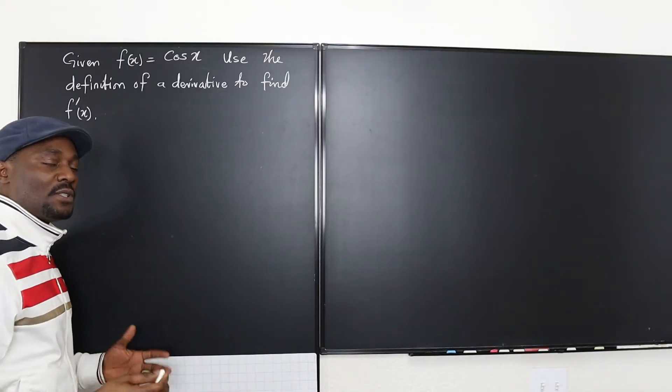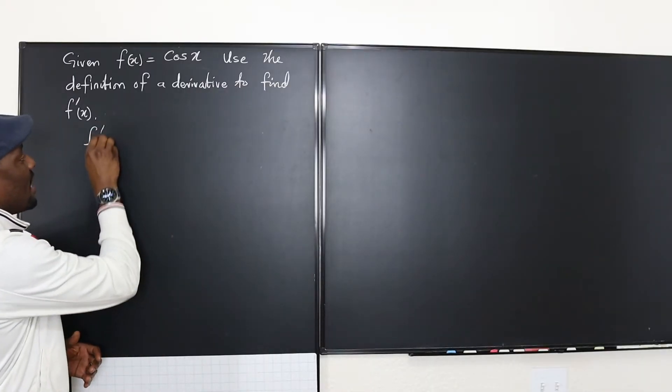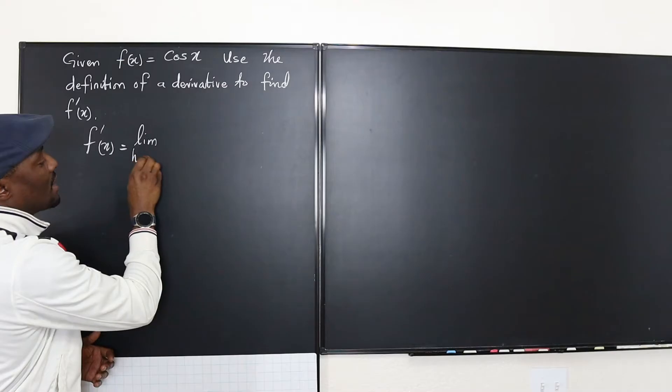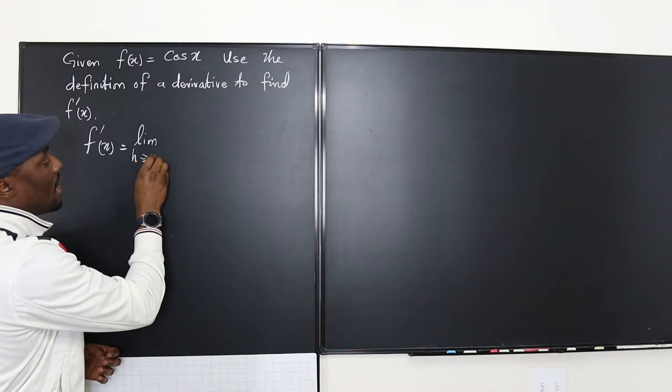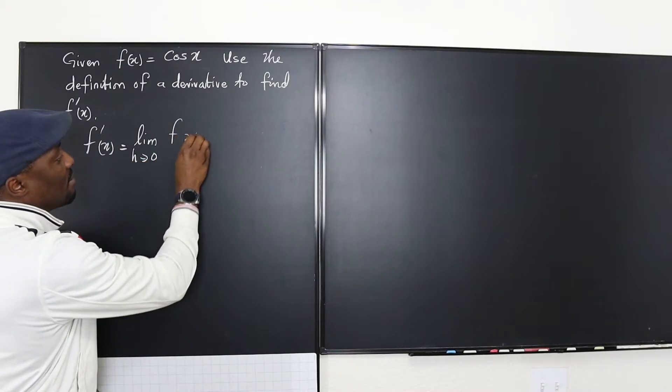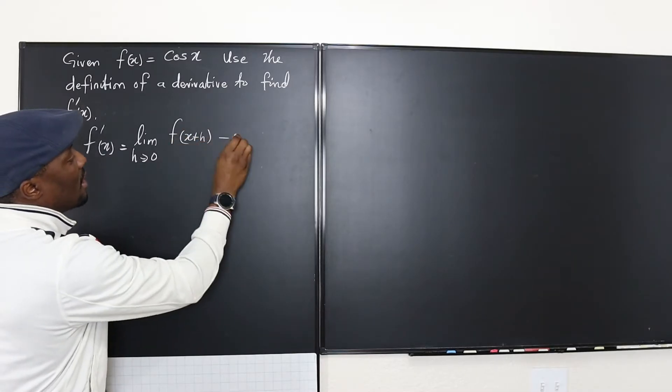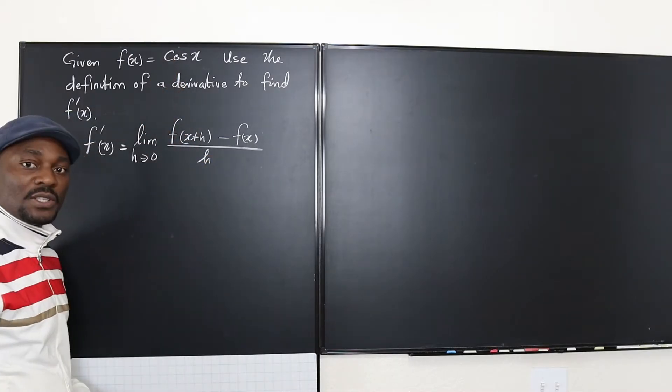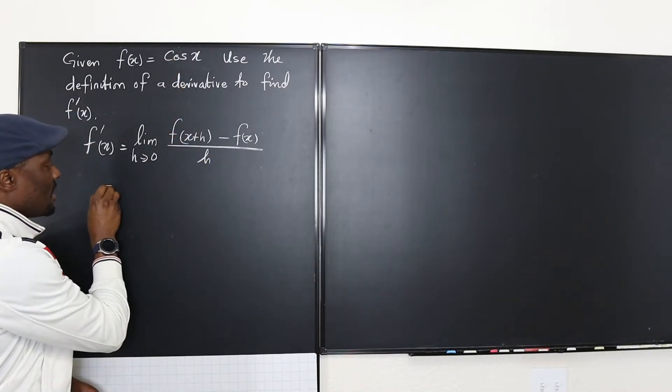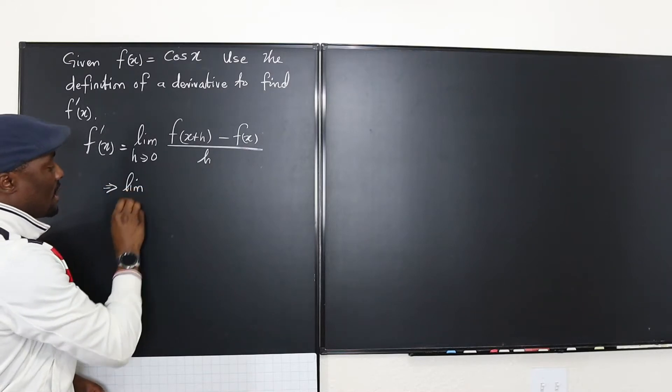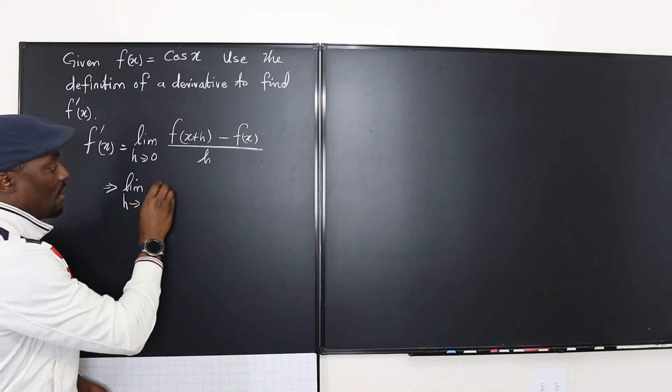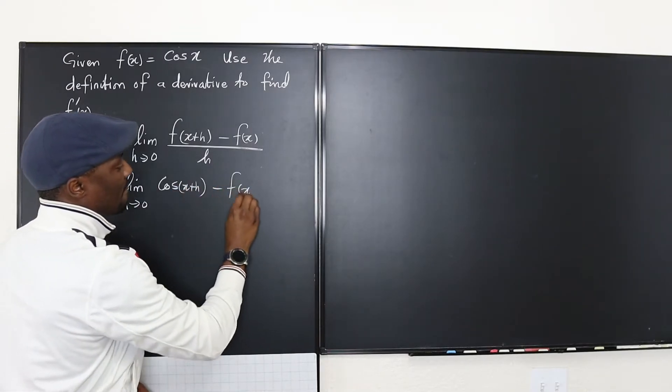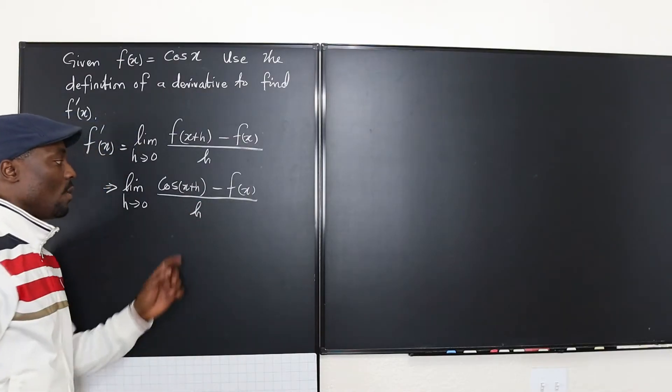So the general definition of a derivative is that f prime of x is equal to the limit as a small change h approaches zero of f of x plus that small change minus f of x over h. So we're gonna now use the function which is cosine and that's gonna be the limit as h goes to zero of cosine of x plus h minus f of x over h.